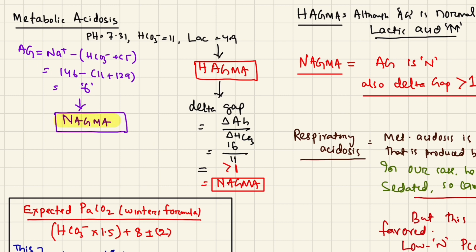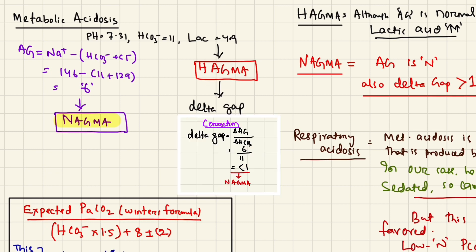However, none of you mentioned the lactate, which is 4.9. Lactate cannot produce a normal anion gap acidosis — it produces a high anion gap acidosis (HAGMA). Even though the anion gap appears normal here, because the NAGMA has overshadowed the HAGMA, the patient is still having a HAGMA due to the elevated lactate. If you calculate the delta gap — change in anion gap divided by change in bicarbonate — it comes to more than 1, which confirms HAGMA.